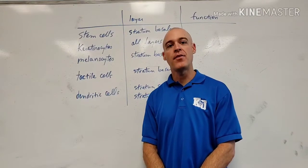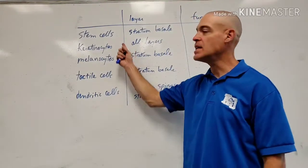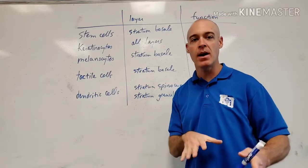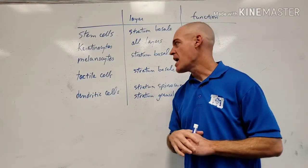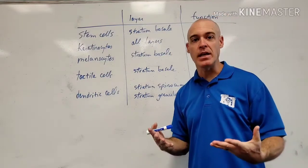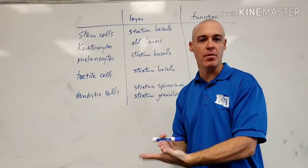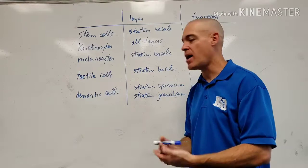Hey guys, today we're going to talk about the five cells found in the epidermis. Keep in mind the epidermis is the outer layer of skin and it is predominantly stratified squamous epithelial cells.